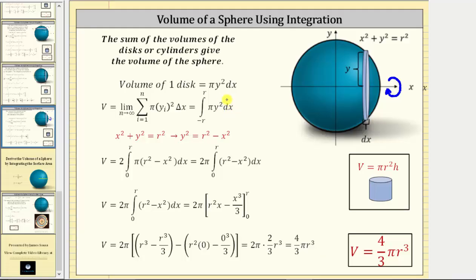Also, because of the differential x, we know we have to integrate with respect to x, and therefore, we need to perform a substitution for y squared using the equation x squared plus y squared equals r squared. Solving for y squared, we have y squared equals r squared minus x squared.